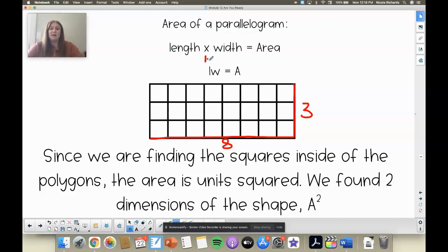And we don't want to write LXW. That is going to look like LXW, and X is not a variable. So instead, we just write it LW. When those variables are together, that means to multiply. So length times width, 8 times 3, equals the area of 24.